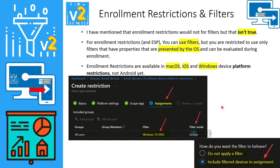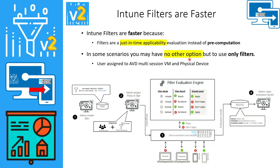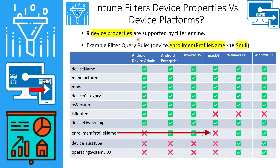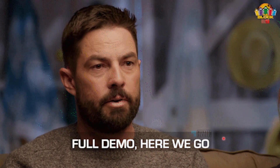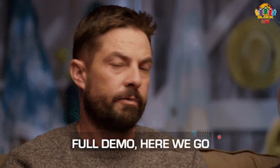In the last video, I presented a table of supported device properties versus device platform. One piece of information was inaccurate: enrollment profile name for macOS was listed as not supported, but the accurate technical information is that it is supported. Let's have a quick look at this in the Intune portal.